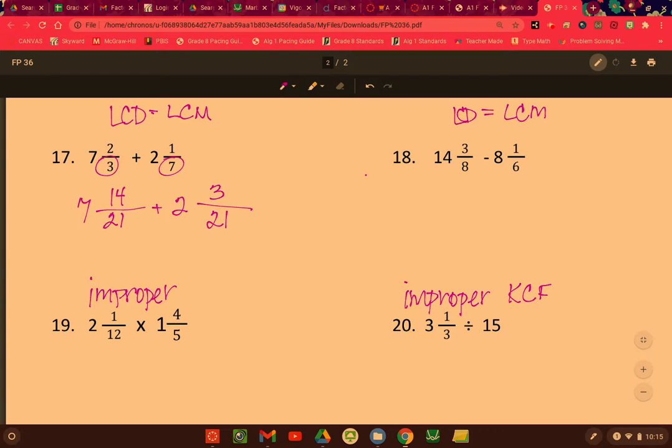Then for this one, we need the least common denominator between 6 and 8. Now be careful, these are not both primes, so they actually have a common multiple that's less than 48.